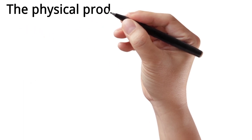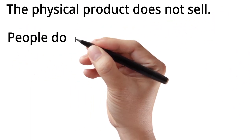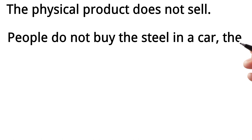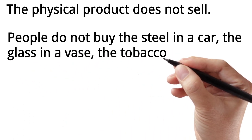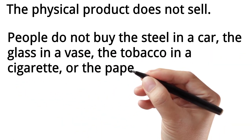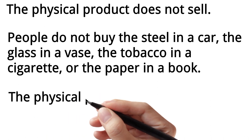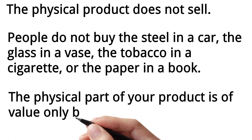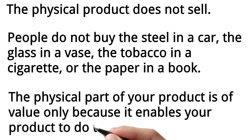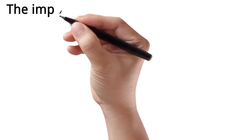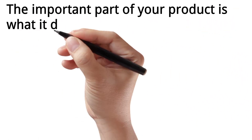The physical product does not sell. People do not buy the steel in a car, the glass in a vase, the tobacco in a cigarette, or the paper in a book. The physical part of your product is of value only because it enables your product to do things for people.